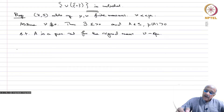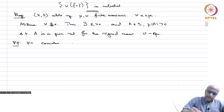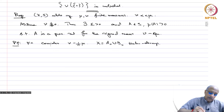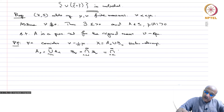We have two finite measures and we are taking nu - epsilon*mu; we claim it has a positive set whose mu-measure is also strictly positive for some epsilon. Proof: For each n, consider the Hahn decomposition of nu - (1/n)*mu: X = A_n ∪ B_n. Define A_0 = ∪_{n=1}^∞ A_n and B_0 = ∩_{n=1}^∞ B_n. Note B_0 = A_0^complement.